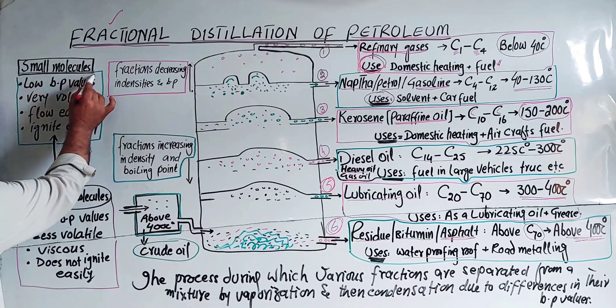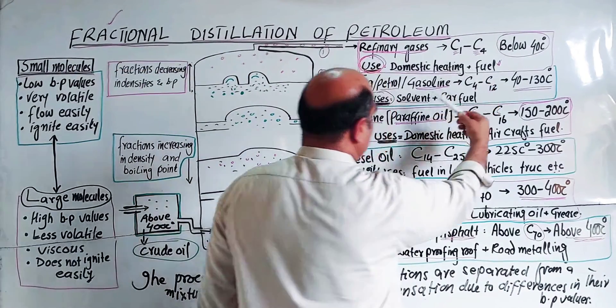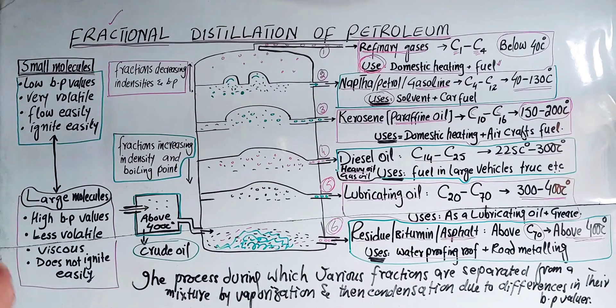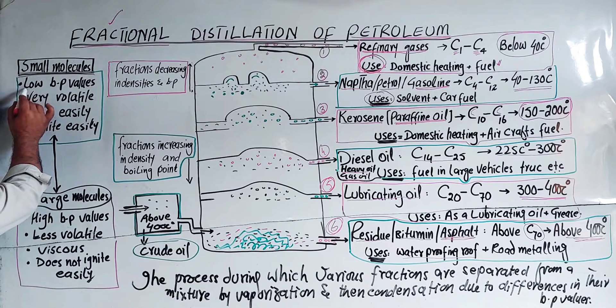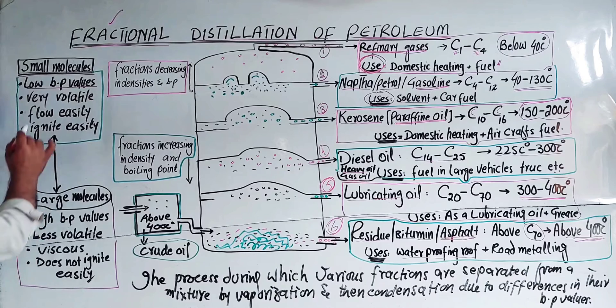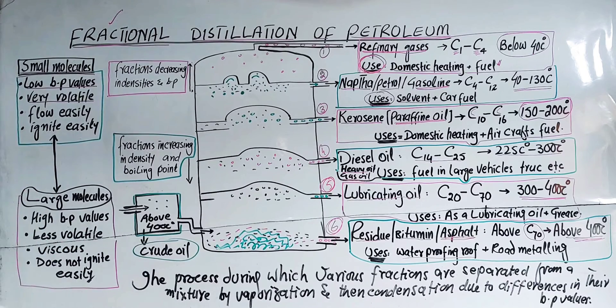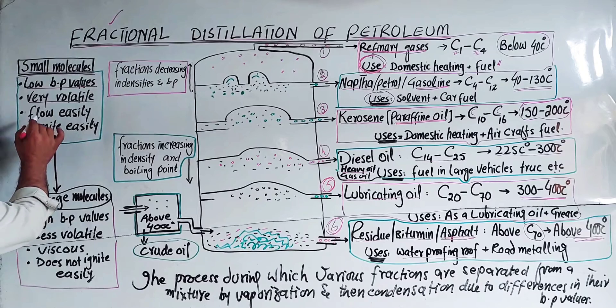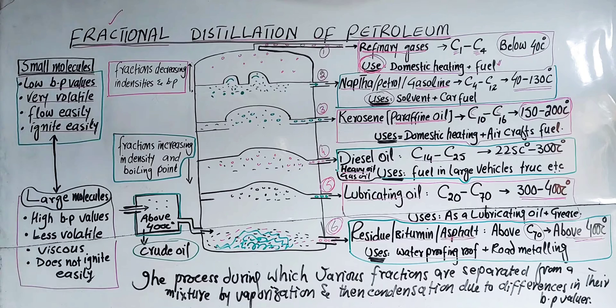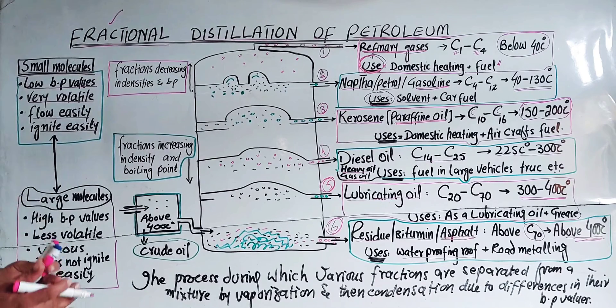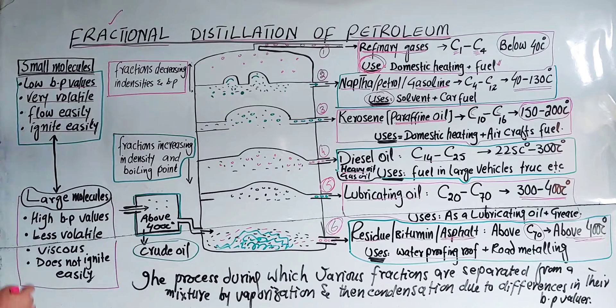The fractions obtained from the top portion are small molecules with carbon atoms up to four. These small molecules have properties including low boiling point values, they are very volatile and evaporatable. They flow easily, ignite easily, and produce less heat per mole. So volatile means evaporatable and they ignite easily.